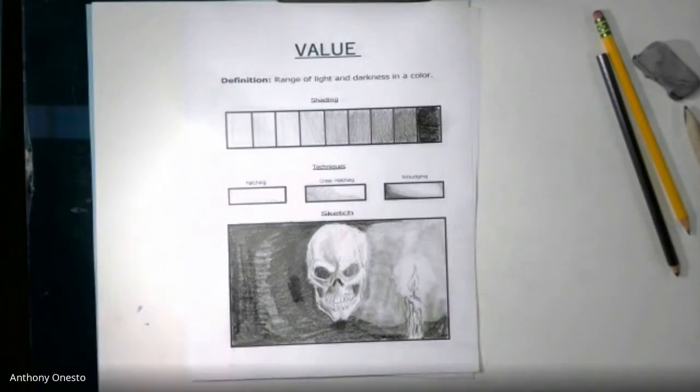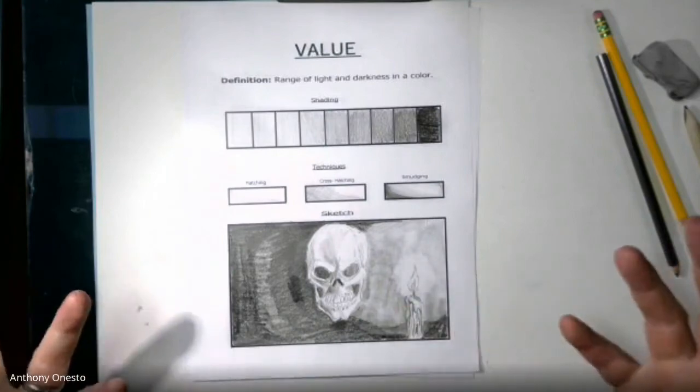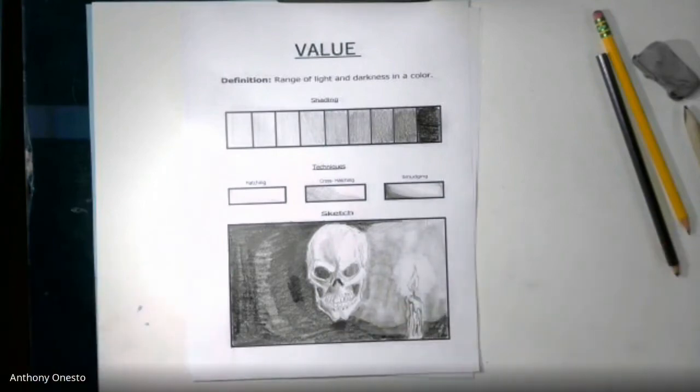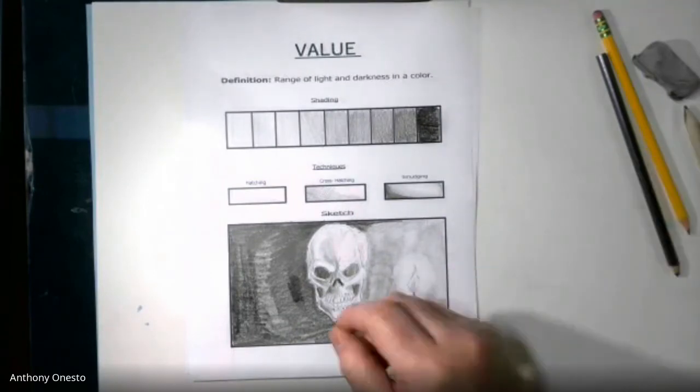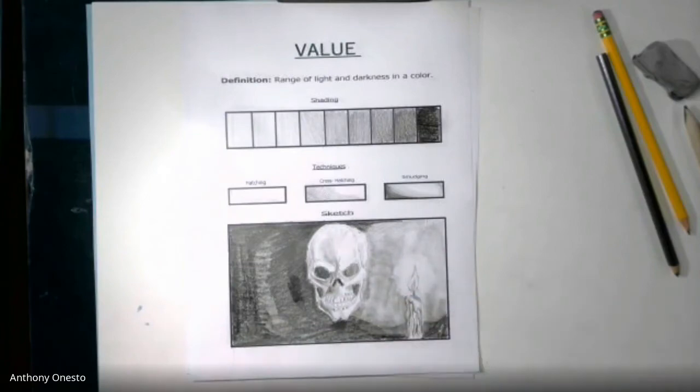You could do a skull too. Just look one up on the computer if you have access to a computer, which I assume you do because you're watching this video. Or just take a still life object, just grab some stuff, your shoe, and just draw your shoe and put some shading and shadowing.